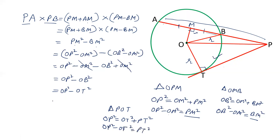So OP squared minus OT squared we can write as PT squared. And we have PA into PB on the left hand side. So we have proved that PA into PB is PT squared.